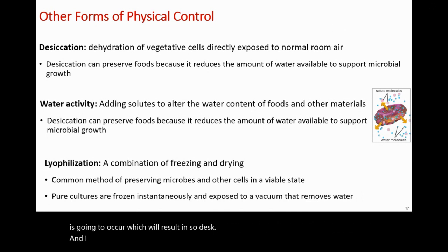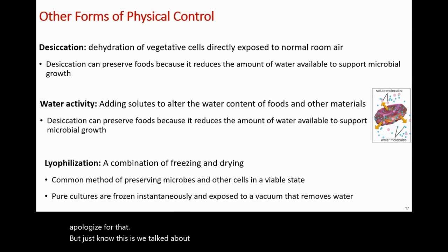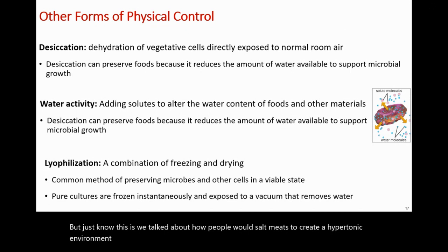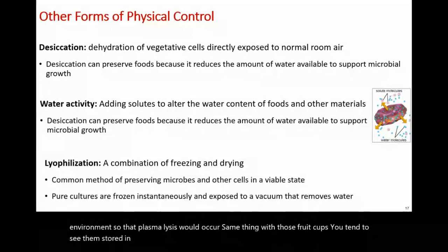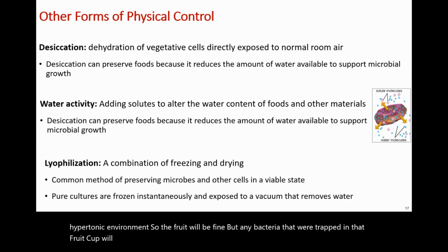We talked about how people would salt meats to create a hypertonic environment so that plasmolysis would occur. The same concept applies to fruits stored in sugary syrup in the grocery store — it creates a hypertonic environment so the fruit is fine, but any bacteria trapped in that fruit cup will die because of the hypertonic sugary solution.